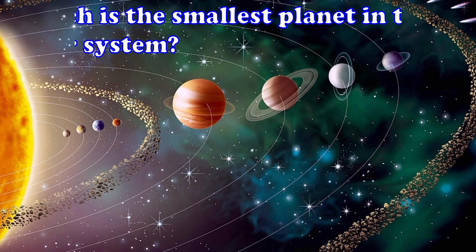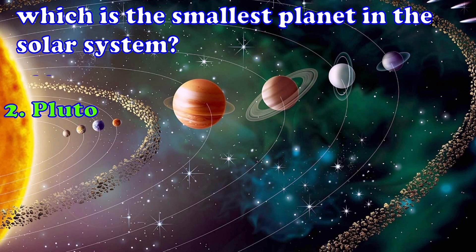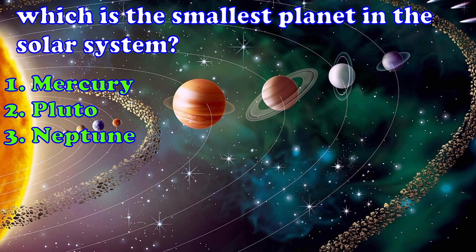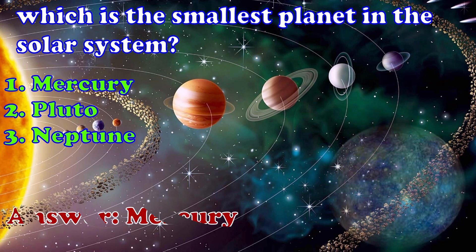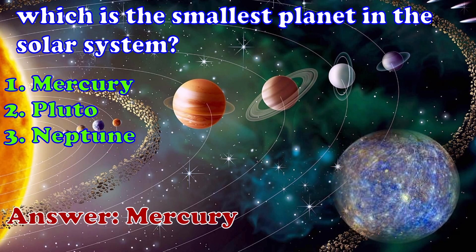Which is the smallest planet in the solar system? 1. Mercury, 2. Pluto, 3. Neptune. Answer is Mercury.